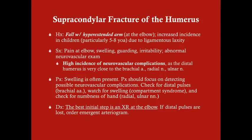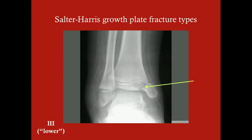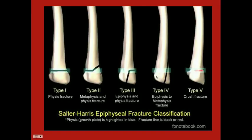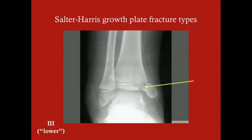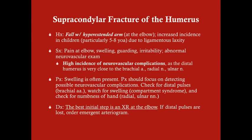Whether or not you need to know all the Salter Harris differences for the USMLE, what you must know is that when you have a growth plate fracture, it is essential that the growth plate be restored to its correct anatomical position. The growth plate generates new osteocytes so the bone can grow properly. If it's out of alignment or separated, you won't get proper growth. Fractures at the growth plate require immediate attention — failure to fix them can result in abnormal growth.